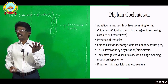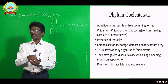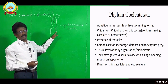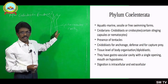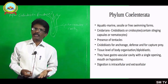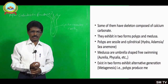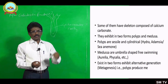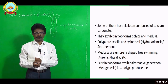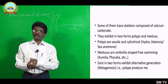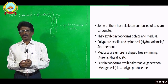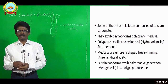In the coelenterates, digestion may be both intracellular and extracellular. The cells lining the gastrovascular cavity are meant for digestion of food materials. In some cases, digestion may take place within the cells — intracellular digestion. And the gastrovascular cavity is also meant for extracellular digestion with digestive enzymes. Some of them have a skeleton composed of calcium carbonate, as seen in corals — there is a deposition of calcium carbonate around the body like a skeleton.